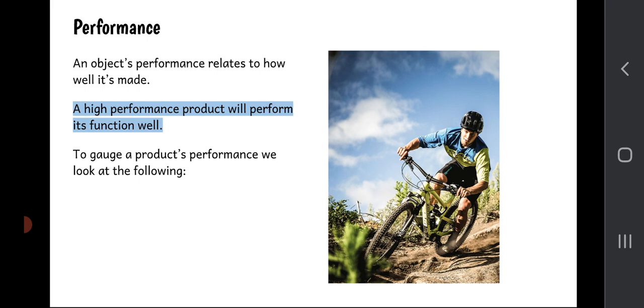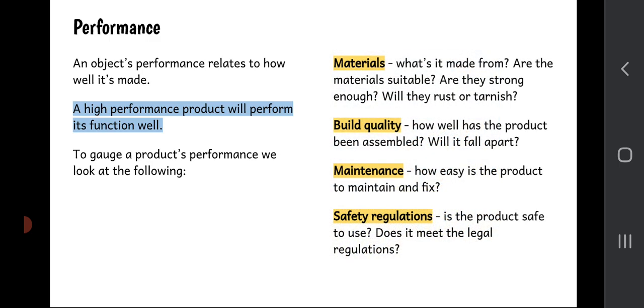So I've included a photograph here of a mountain bike. If its primary function is to get a human up and down rugged terrain, then a high performance mountain bike will do that really well. And that's what we mean about performance. So take a minute to copy those words into your jotter, including the heading and including that blue sentence as well.